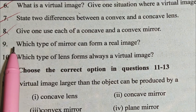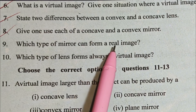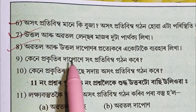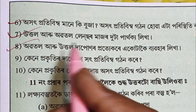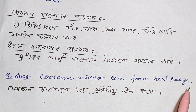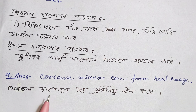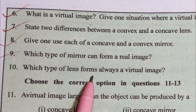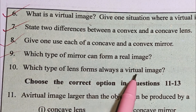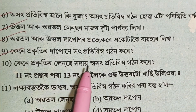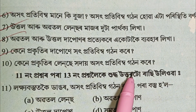Number 9: Which type of mirror can form a real image? Number 10: Which type of lens always forms a virtual image?